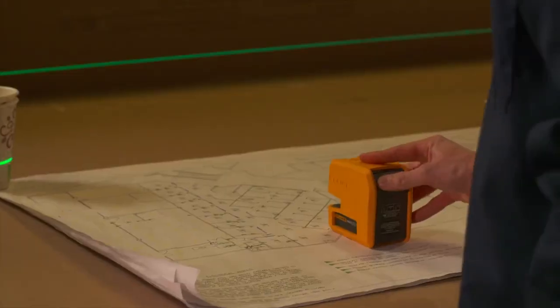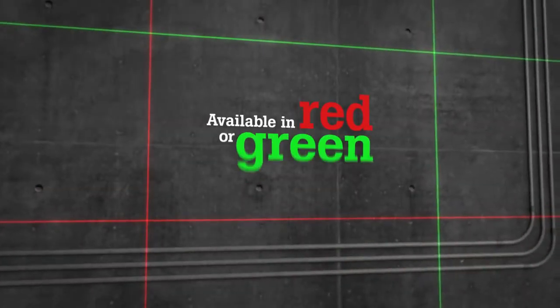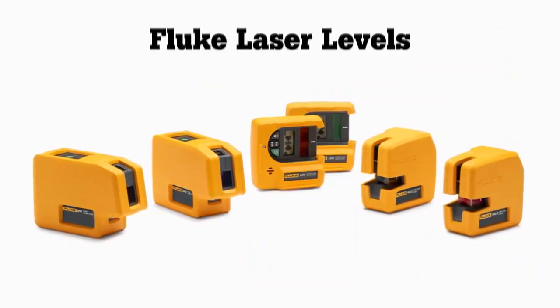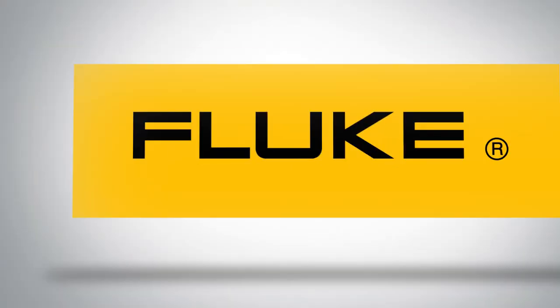Built to exacting Fluke standards, our laser levels are tested to survive a one-meter drop, and both the point-to-point and line laser levels are available in red and green, so you can get the job done no matter what condition you're working in. Available where you buy Fluke test tools.